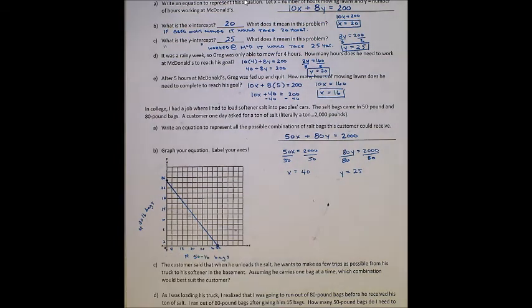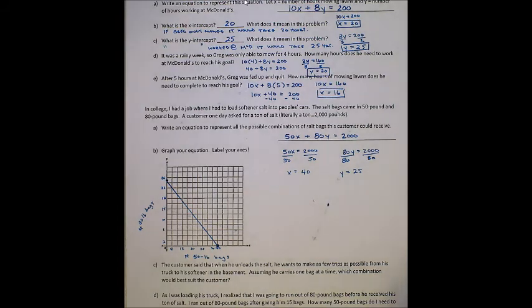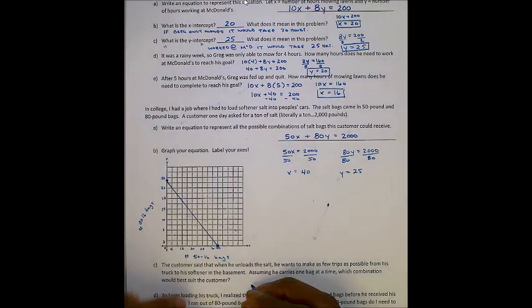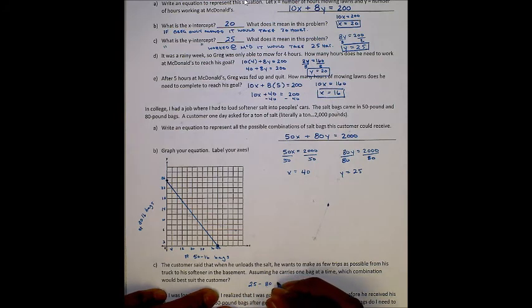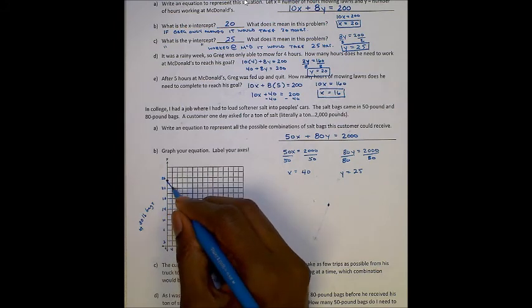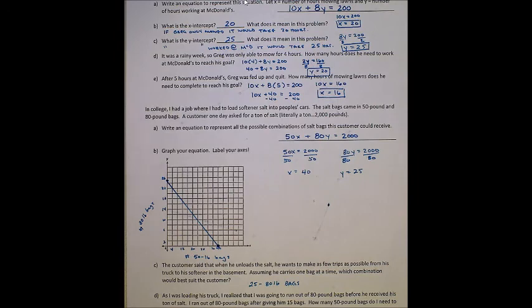And so, these are all the possibilities. You could get 40, 50-pound bags. Or, he could get 25, 80-pound bags. Or, he could get any of the combinations that happen on this line. The customer said that when he unloads the salt, he wants to make as few trips as possible from his truck to his softener in his basement. Assuming he carries one bag at a time, which combination would best suit the customer? Which one allows the fewest visits? The fewest trips. Well, it makes sense that the 80-pound bags. 25, 80-pound bags. That's the fewest bags as we can have.